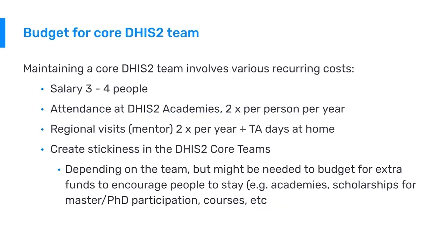Foundational budget lines also include salaries or incentives for the core team, social costs such as office space and mobile phones, and infrastructure like laptops and internet. Specifically, budgeting for the DHIS2 core team is important — set aside money for around three to four people, funding for academies, regional mentor visits, and capacity building. Since core teams often lose members to better-paying organizations, creating 'stickiness' through incentives like scholarships for master's or PhD programs can encourage people to stay on the team.